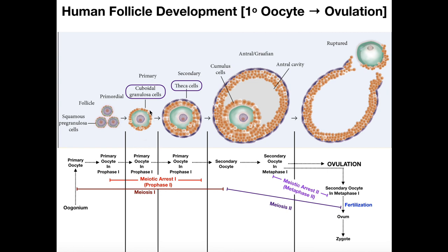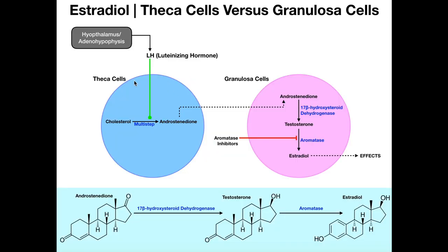At some point the primary follicle develops into a secondary follicle. Notice a few things: it's larger, the layer of granulosa cells is thicker — here it was just one layer, but now there are many more layers. Also, around the periphery of those granulosa cells we have a new cell type called theca cells. The granulosa cells and theca cells play important roles in maintaining oogenesis and also synthesizing hormones.